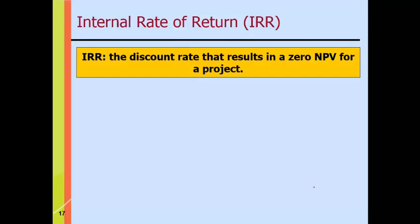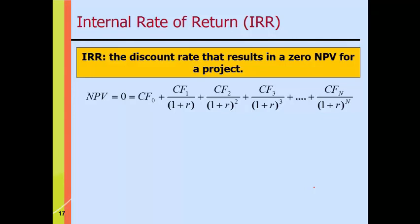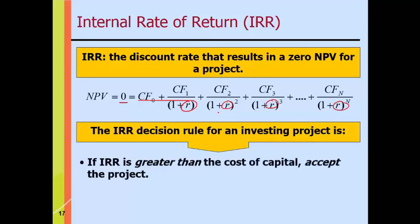Closely related to NPV is the internal rate of return, IRR. IRR is simply the discount rate that results in a zero net present value for a project. We find it by setting NPV to zero and solving for R in the discounted cash flow equation — the algebra would be a little tricky, but Excel handles it easily. The decision rule: if IRR is greater than the cost of capital — the hurdle rate or opportunity cost of capital — accept the project. If the yield is not above our threshold, even if positive, it's a no-go.